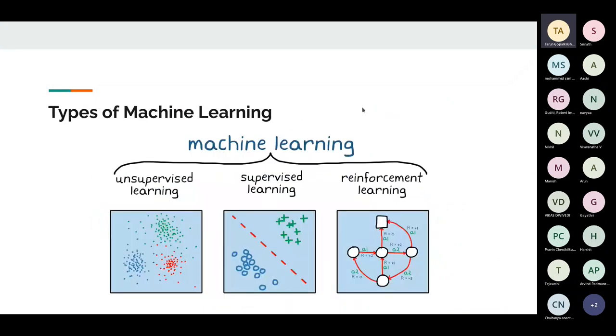What are the types of machine learning? Typically, machine learning falls under three main domains: supervised, unsupervised, and reinforcement learning.